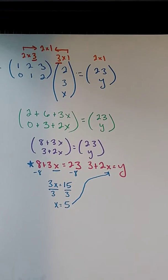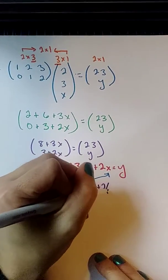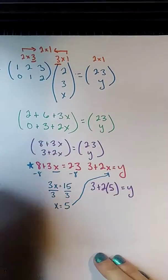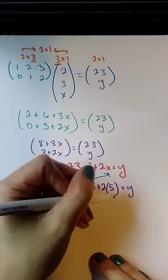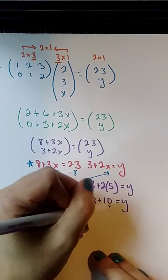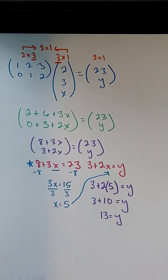So if I do that, I can see here on the right that I'm going to have 3 plus 2 times 5, because I now know x is 5. And that's going to equal y. So all I have to do is solve the left side. 2 times 5 is 10. And 10 plus 3 is 13. Now I know y is 13 and x is 5. And I've solved question 3.